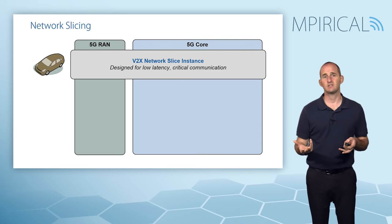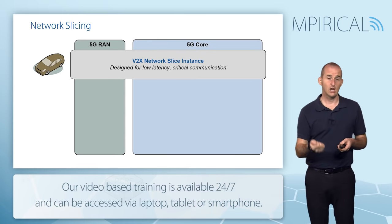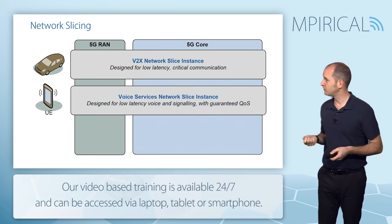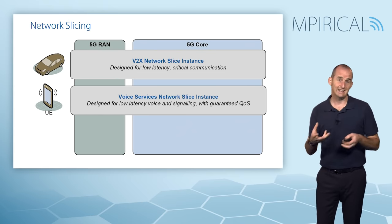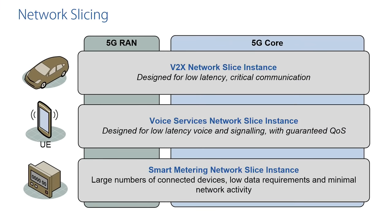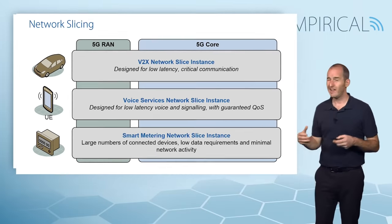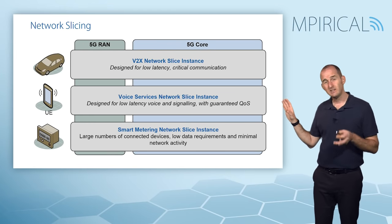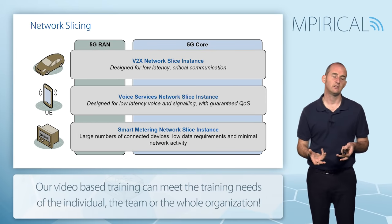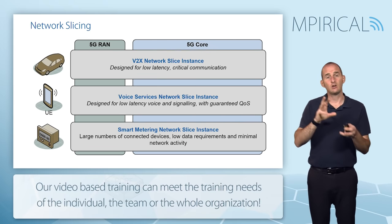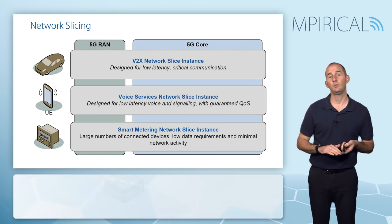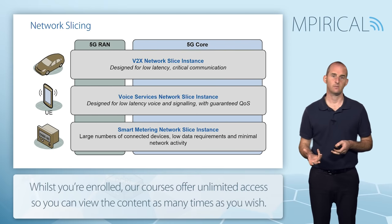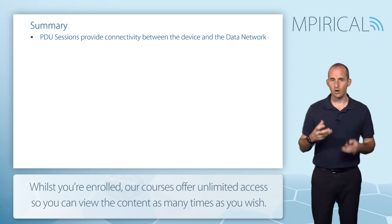To illustrate: across our 5G RAN and 5G core network we might have a V2X network slice with characteristics of low latency and critical communication. On top of the same physical infrastructure we could have voice services for typical human subscribers requiring low latency for voice and signaling and guaranteed QoS. We might also have a smart metering network slice accommodating large numbers of connected devices with low data requirements and minimal network activity. Standards allow an individual device to connect to up to eight network slices simultaneously.